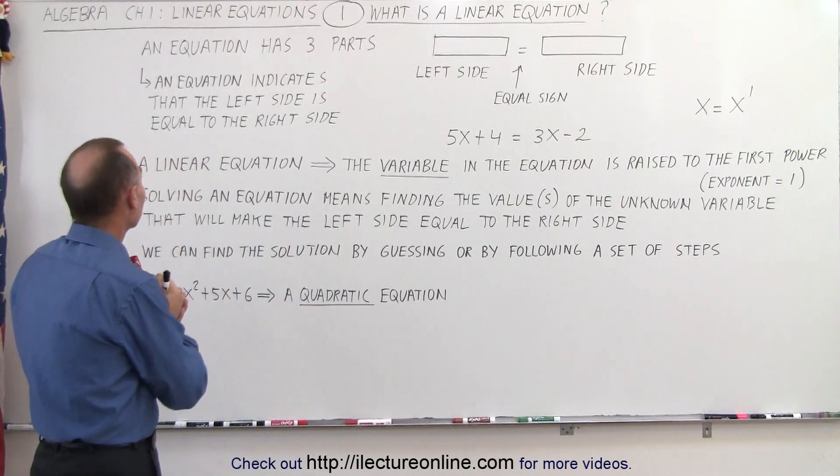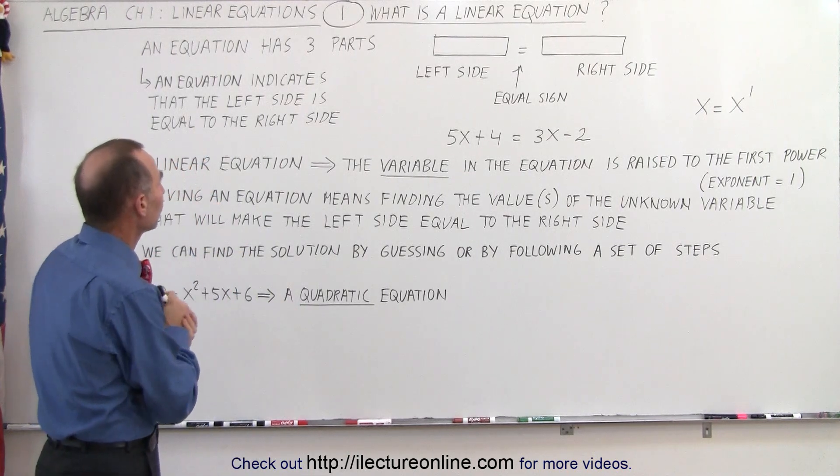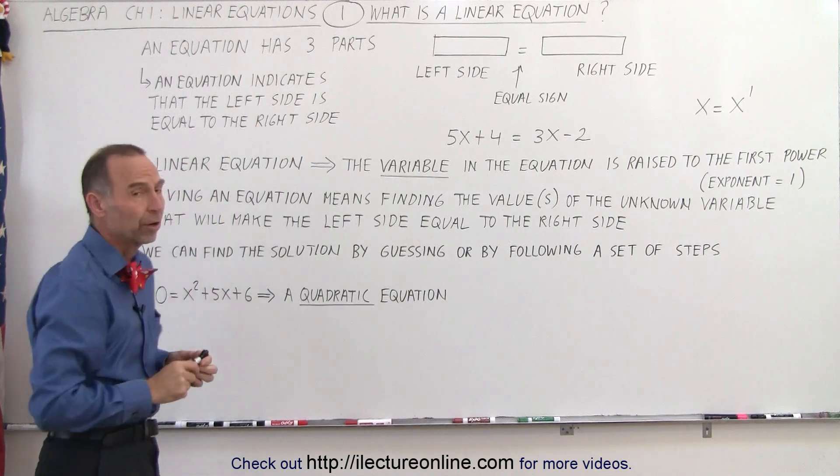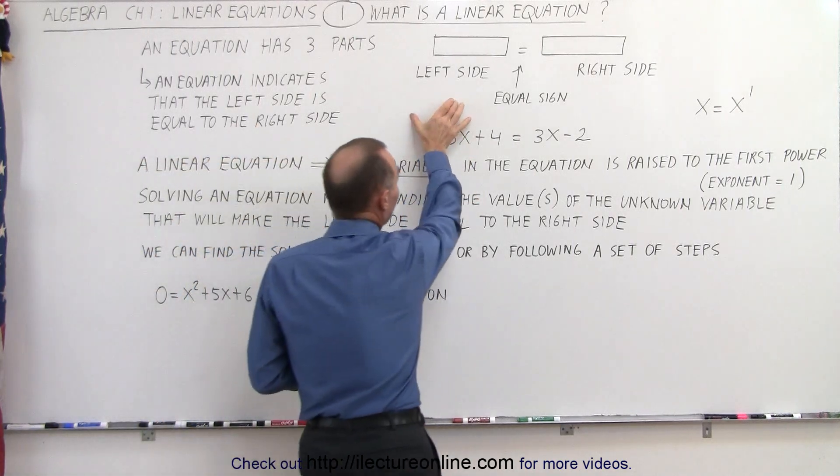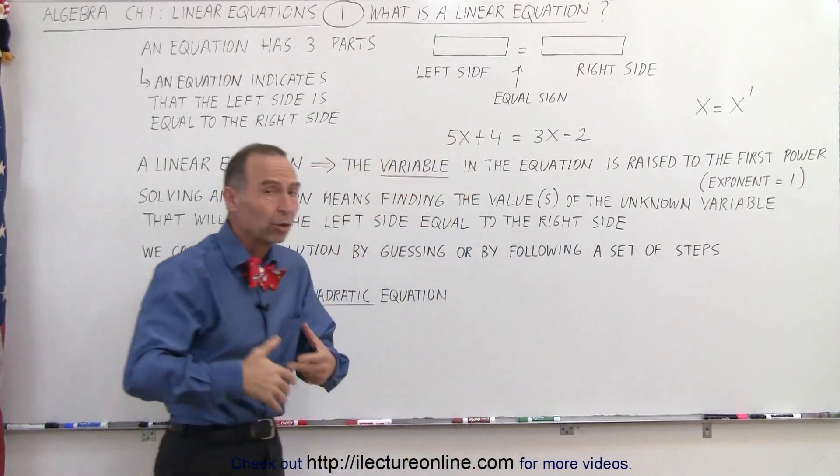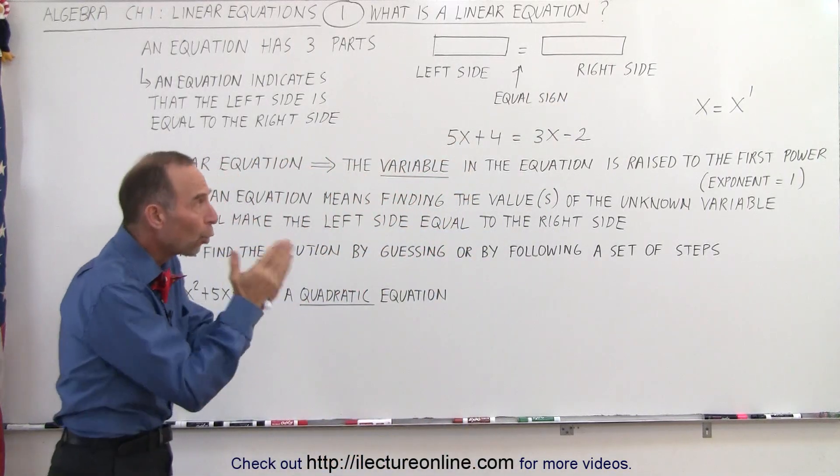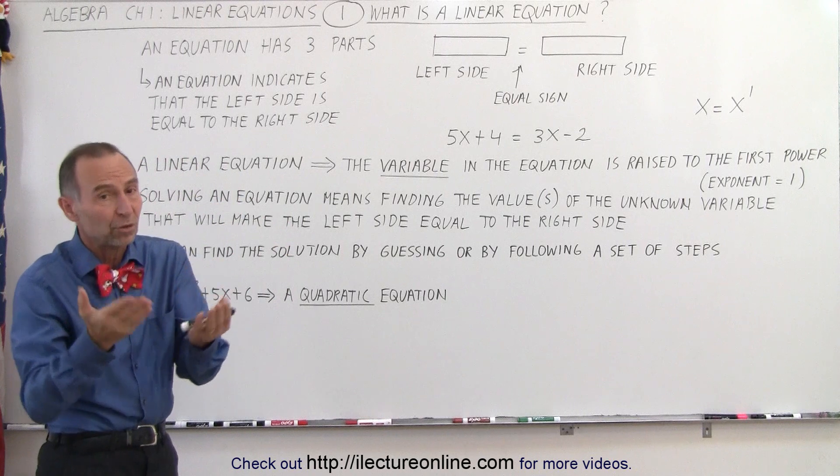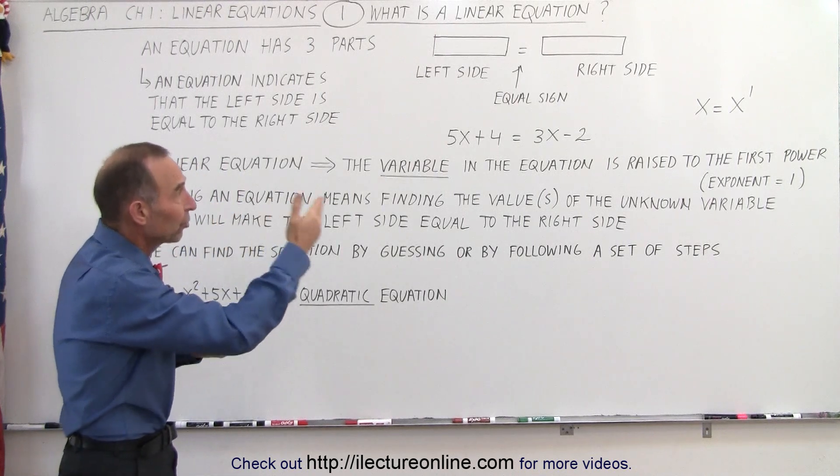Well, first of all, let's figure out what an equation is. An equation has three parts: a left side, an equal sign, and a right side. And an equation, by its name, equates the left side to the right side, which means the left side equals the right side.